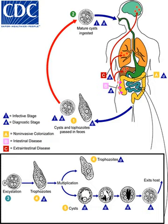Since amoebiasis is transmitted through contaminated food and water, it is often endemic in regions of the world with limited modern sanitation systems, including Mexico, Central America, Western South America, South Asia, and Western and Southern Africa. Amoebic dysentery is often confused with traveler's diarrhea because of its prevalence in developing nations. In fact, most traveler's diarrhea is bacterial or viral in origin.